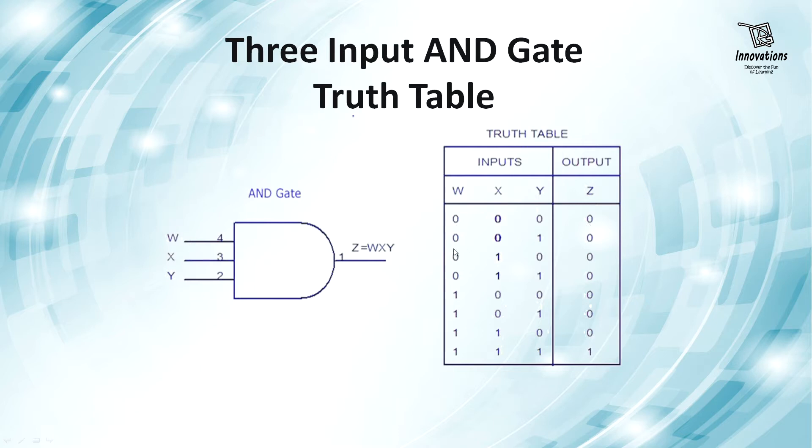where input is 000, output is 0, input is 001, output is 0. In every case, unless all the inputs are 1, the output is 0. Only when all the inputs are 1, the output is 1.